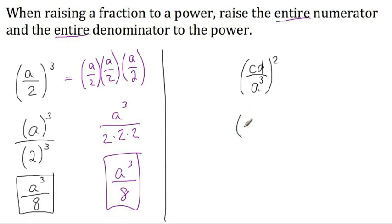So here, the entire numerator is cd. Put it in parentheses and then raise the whole thing to the power. This is the correct way to write it. This means that we're raising the entire numerator to the power.